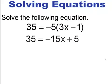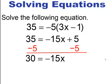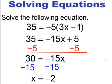Distribute that negative 5, and you end up with negative 15x plus 5. Now you have a two-step equation — subtract 5 from both sides to get 30 equals negative 15x, then divide through by negative 15 to get x equals negative 2.